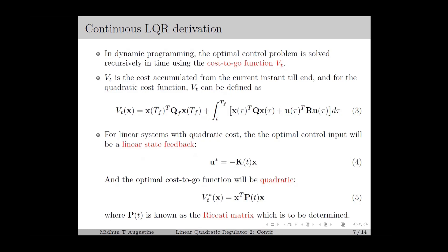Dynamic programming is a recursive approach in which the optimal control input is solved recursively in time. In dynamic programming, we use a cost-to-go function, which is the cost accumulated from the current instant till the end of the time horizon. For the continuous-time LQR problem, the cost-to-go function is defined as in equation 3, which is the integral of the cost from the current instant to the end of the time horizon. We denote the current state by x (which is x(t)) and the current control input by u (which is u(t)). We have the important result that for linear systems with quadratic cost, the optimal control input will be a linear state feedback as in equation 4, where k(t) is the feedback gain. Similarly, the optimal cost-to-go function will be quadratic as in equation 5, where p(t) is known as the Riccati matrix. We need to find expressions for both k(t) and p(t).